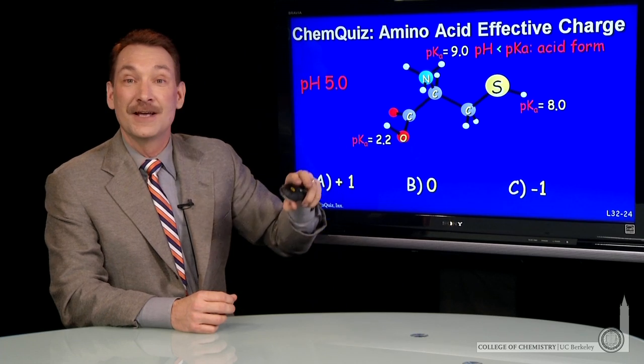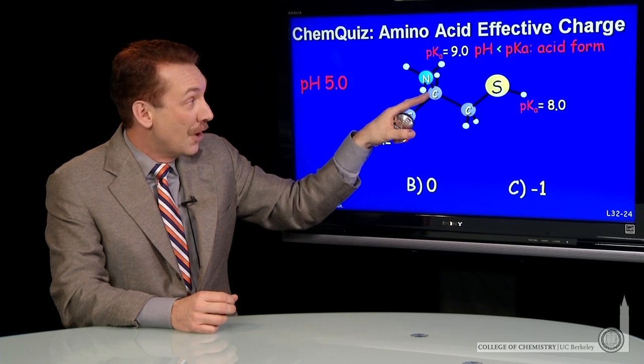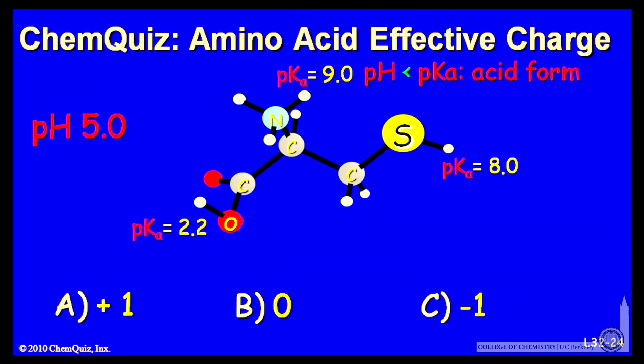Its acidic form is the triprotonated state. And you know for nitrogen with three protons and a carbon attached, that has a positive charge.